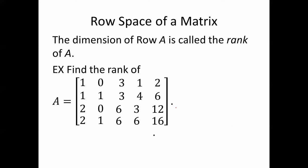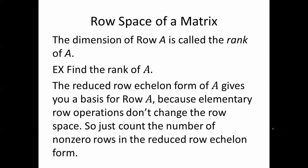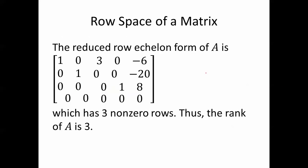The dimension of the row space of A is called the rank of A. Find the rank of this matrix — the matrix A we've been dealing with. The reduced row echelon form of A gives you a basis for the row space of A, because elementary row operations don't change the row space. The row space of A is the same as the row space of the RREF of A. So just count the number of non-zero rows in the reduced row echelon form. In this case the RREF of A has three non-zero rows, thus the rank of A is 3.